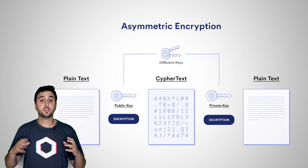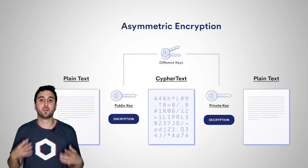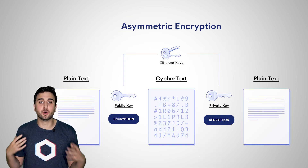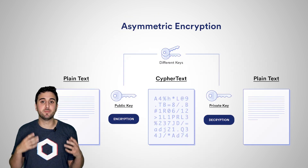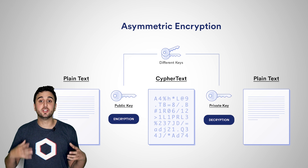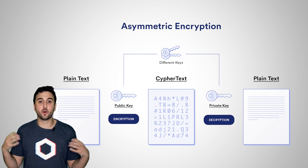The public key can decrypt any messages encrypted by the private key, and the private key can decrypt any messages encrypted by the public key. So the private key holder is the only party that can receive and view messages generated by any public key holders.